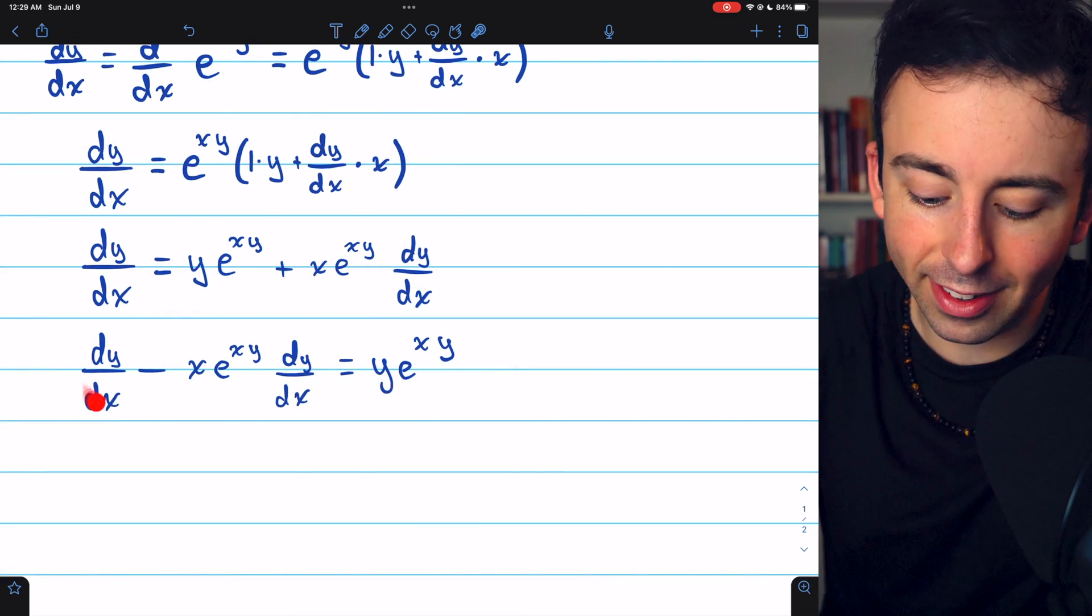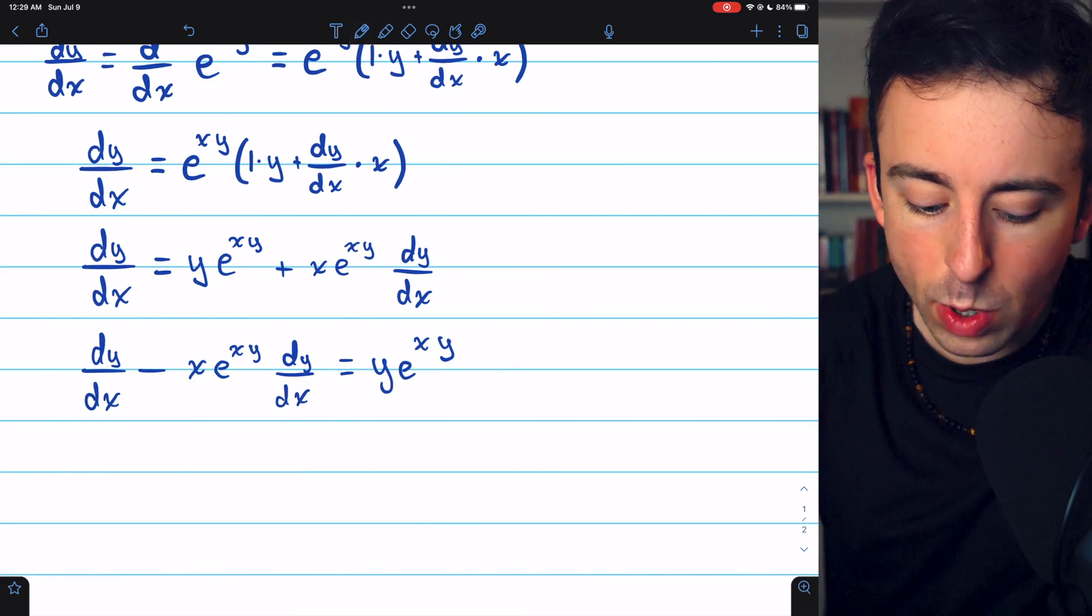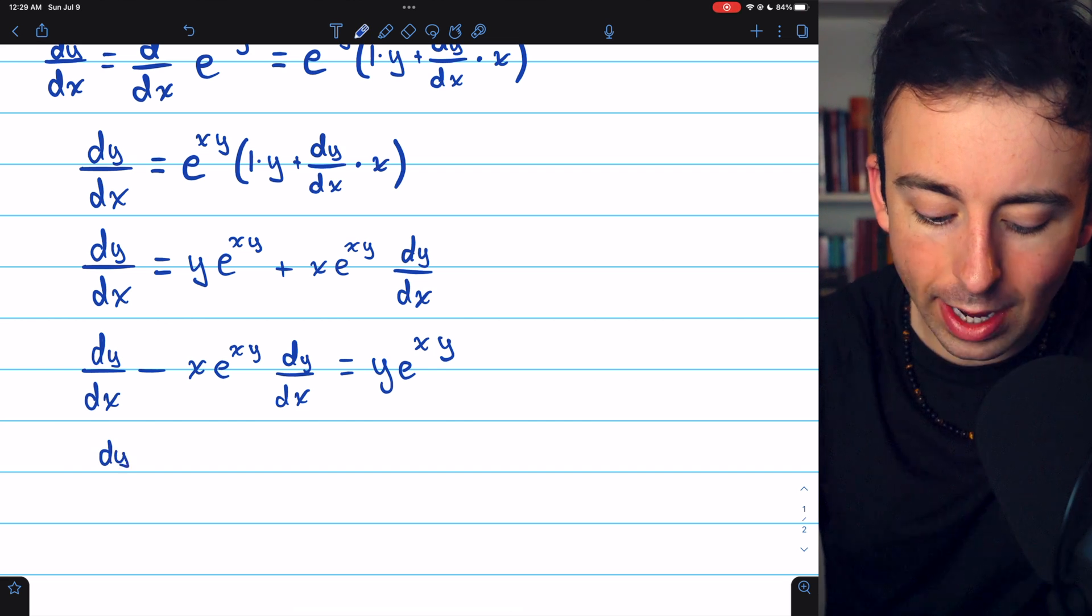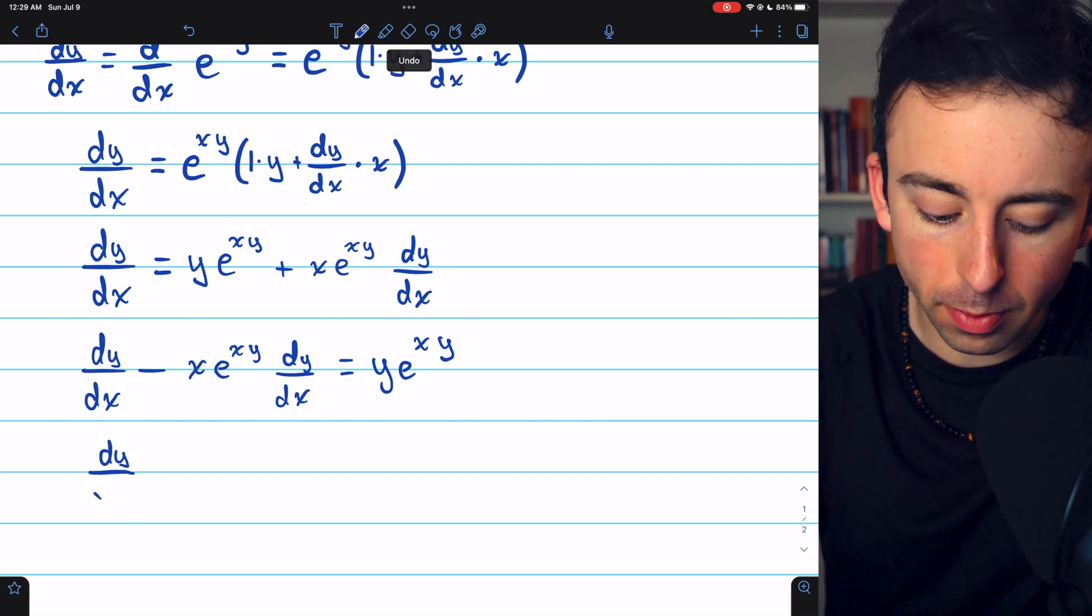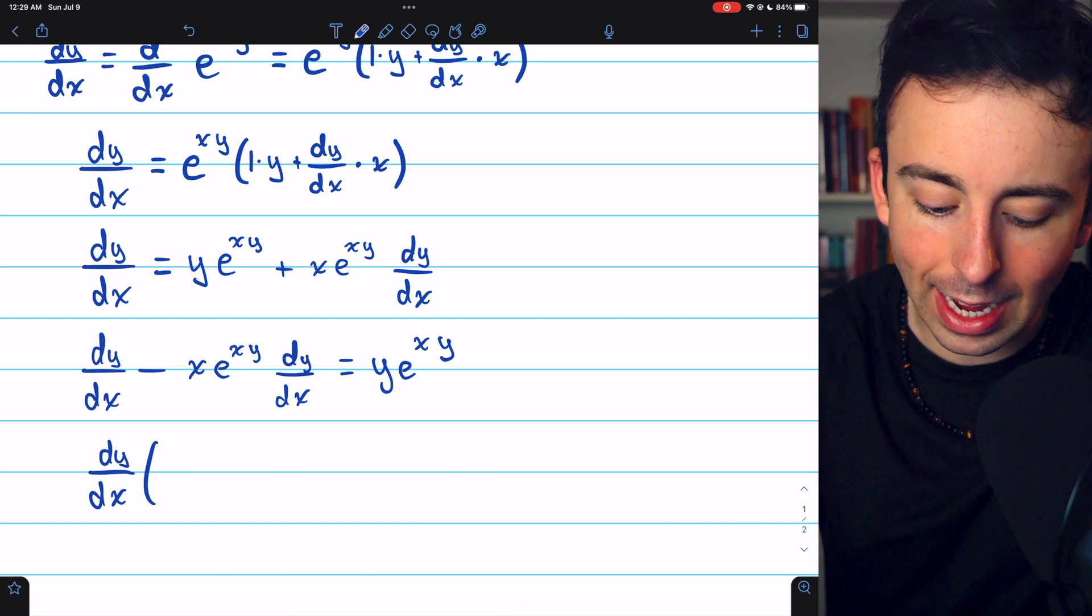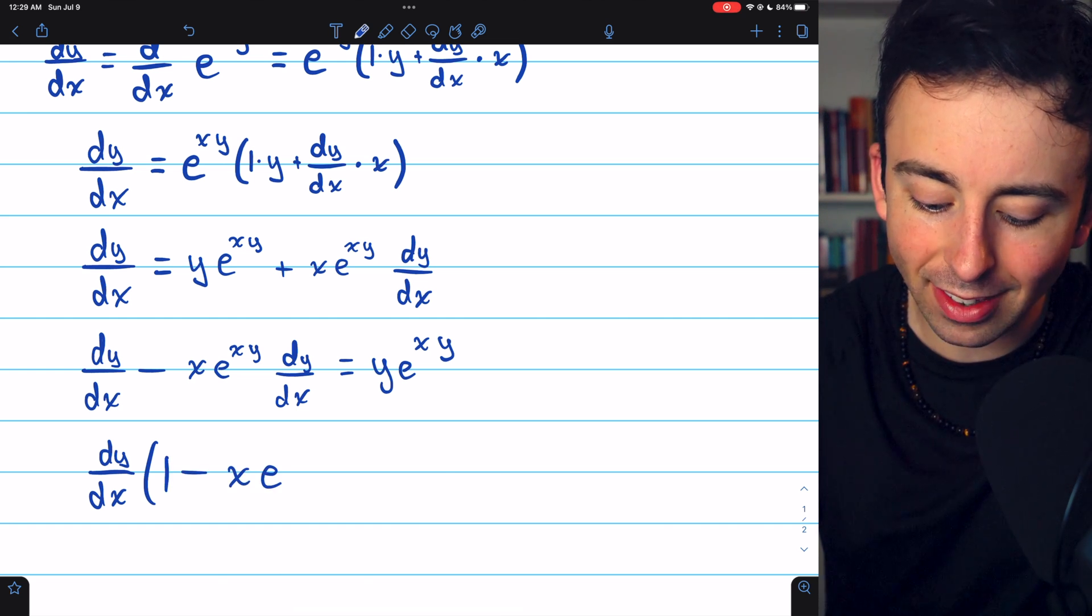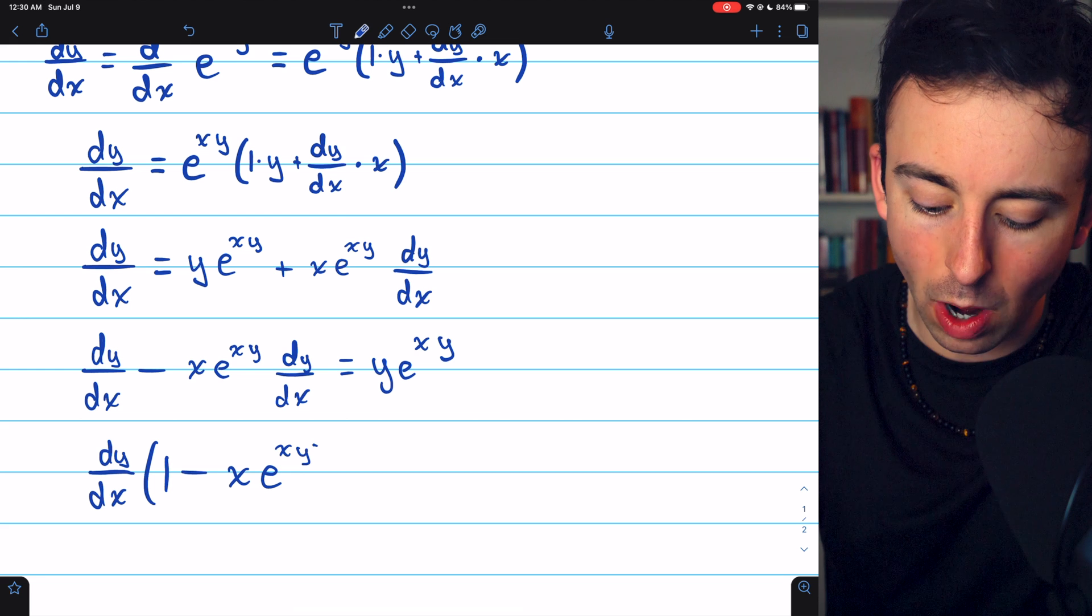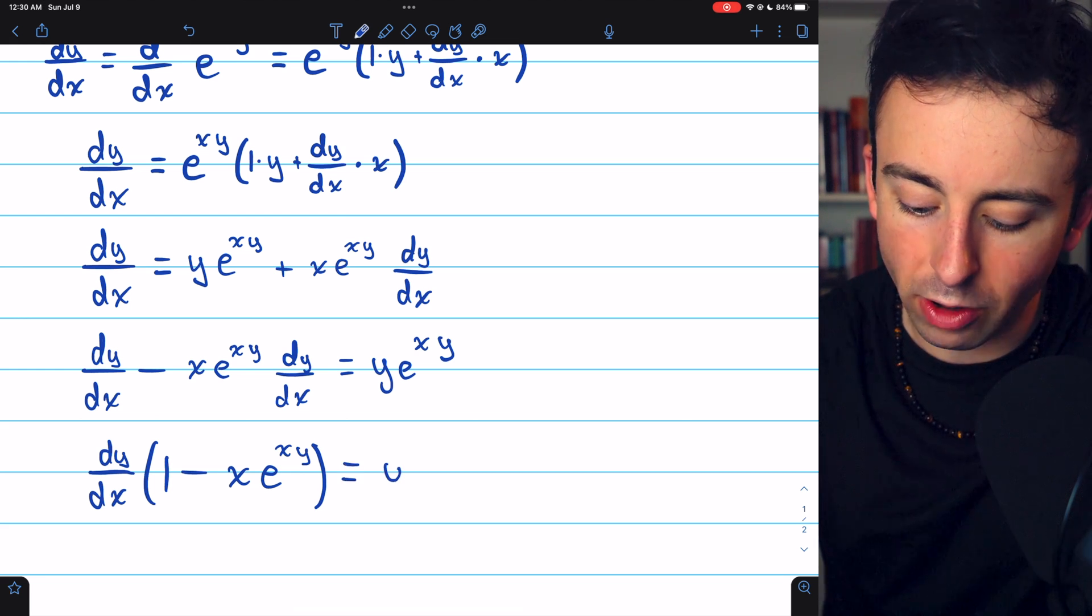Doing that subtraction gets us here. Then we can factor a dy dx out of both terms on the left side of the equation. That gives us dy dx multiplied by 1 minus x e to the xy. On the right side of the equation, we still have y e to the xy.